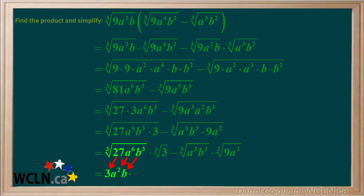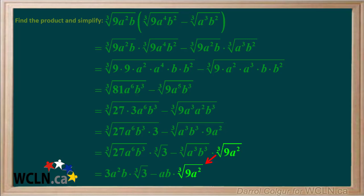Looking at the first term: the cube root of 27 is 3, the cube root of a to the 6th is a squared, and the cube root of b cubed is b. The leftover, the cube root of 3, is just written beside it. Looking at the second term: the cube root of a cubed is a, and the cube root of b cubed is b. We'll write the cube root of the leftover, 9a squared, beside it.